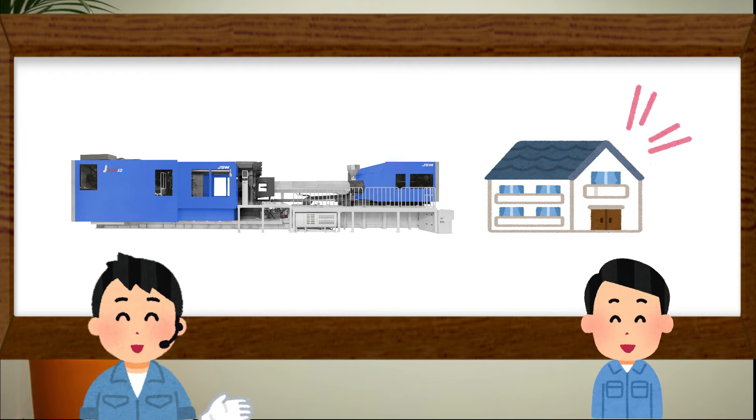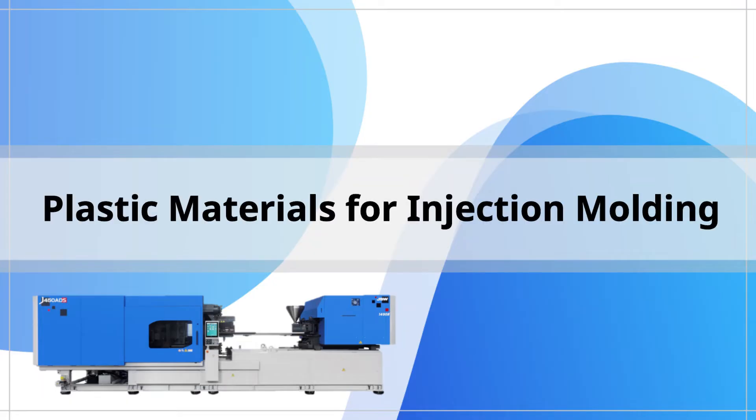By injection molding, you can make various kinds of plastic products, but the plastic materials differ depending on the product. Plastic is divided into two kinds.